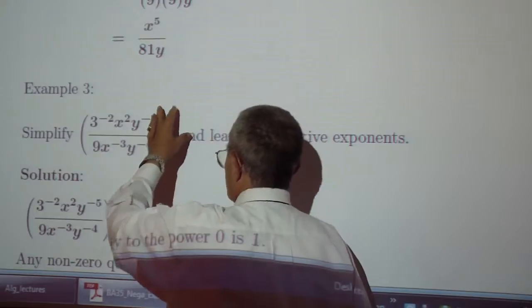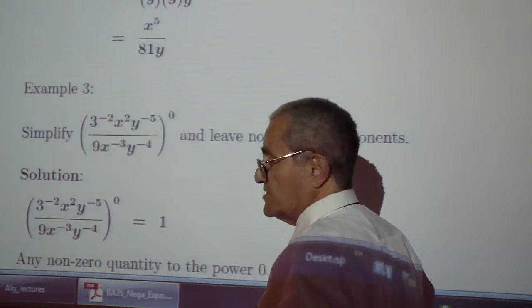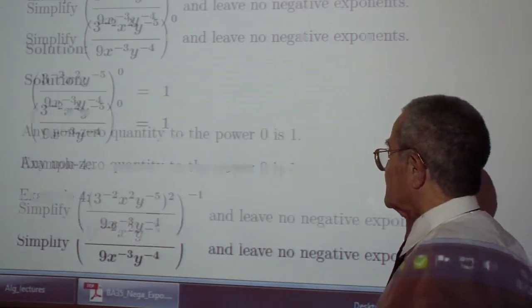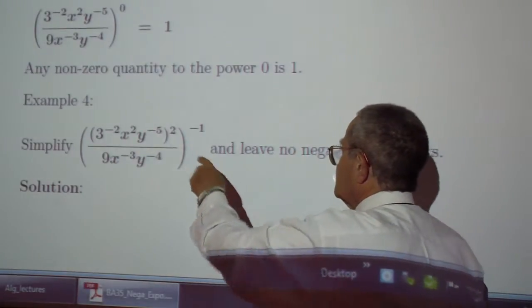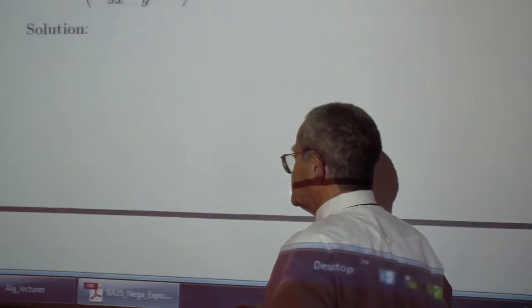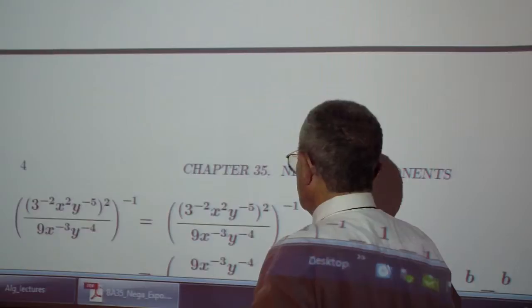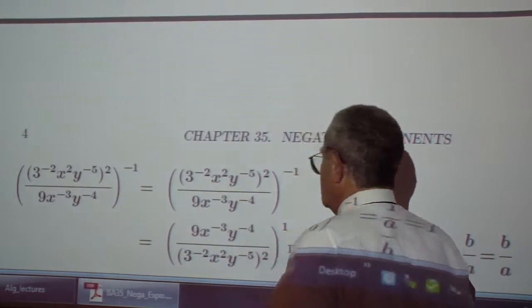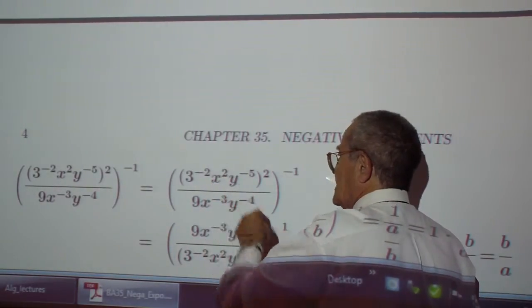Example 3. Quantity to the power 0 is 1. This is a ridiculous little problem. This one can be done in different ways. One way is to modify the inside.